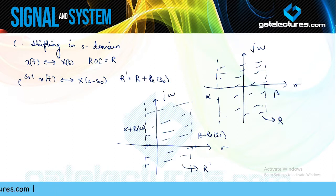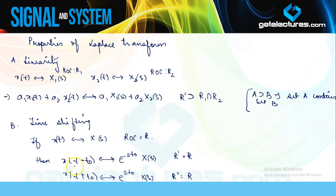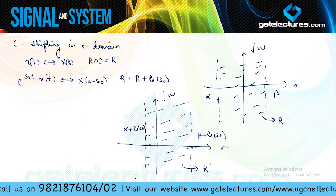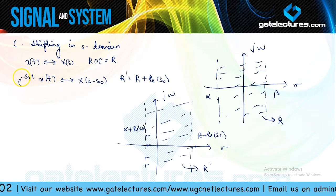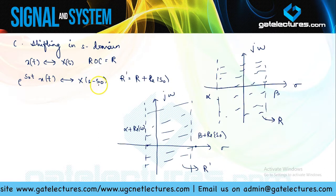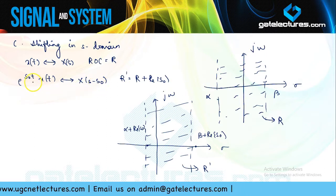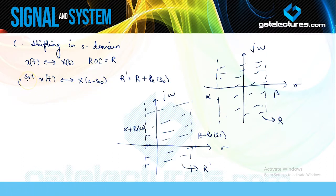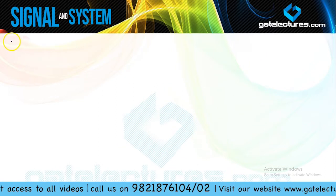Be careful about sign conventions. When shifting in the time domain by −T₀, you multiply by e^(−sT₀). But for shifting in the s-domain by +s₀, you multiply by e^(+s₀t) — the signs are reversed relative to each other. Keep both conventions in mind to avoid mistakes.